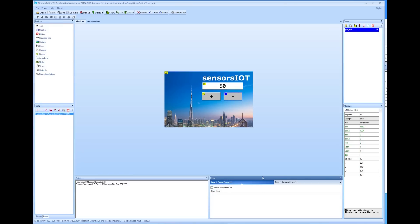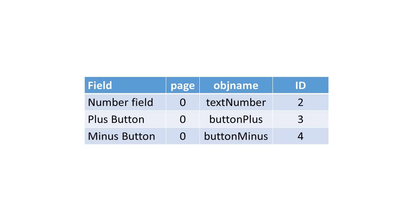This way I can choose later in the Arduino sketch which event I will use. As a last step, we have to make notes of the names of the different objects. The plus button, for example, has the name "button plus" and the ID 3. All objects are on page 0.